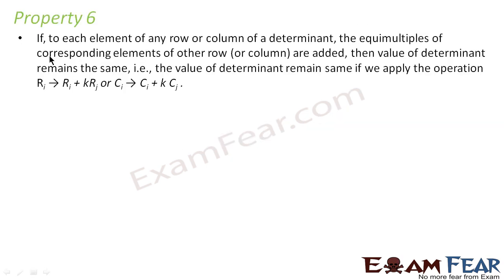The last property — the most complex property — just understand this: for any row i, if you say row i plus some constant into row j, or for any column i, you say column i plus some constant into column j, then the determinant value is the same. It doesn't change at all.